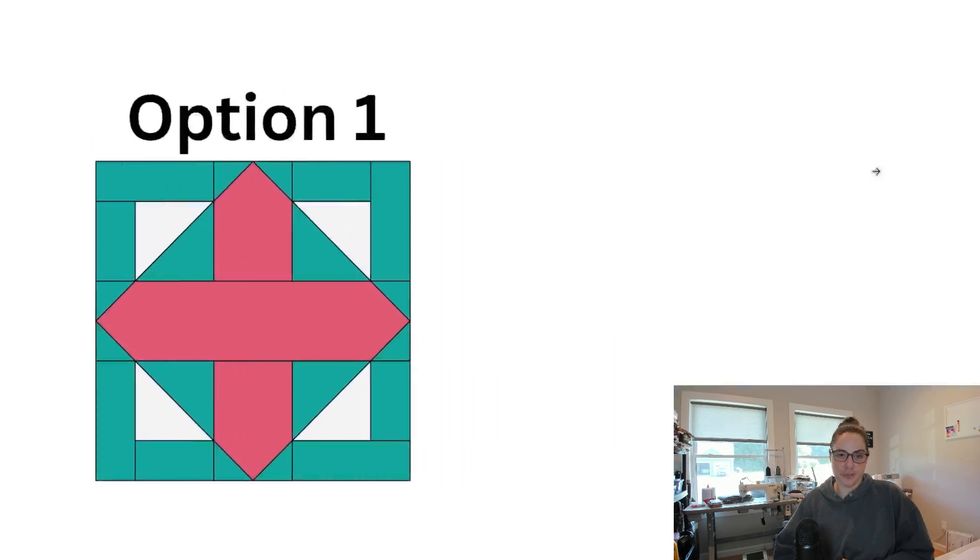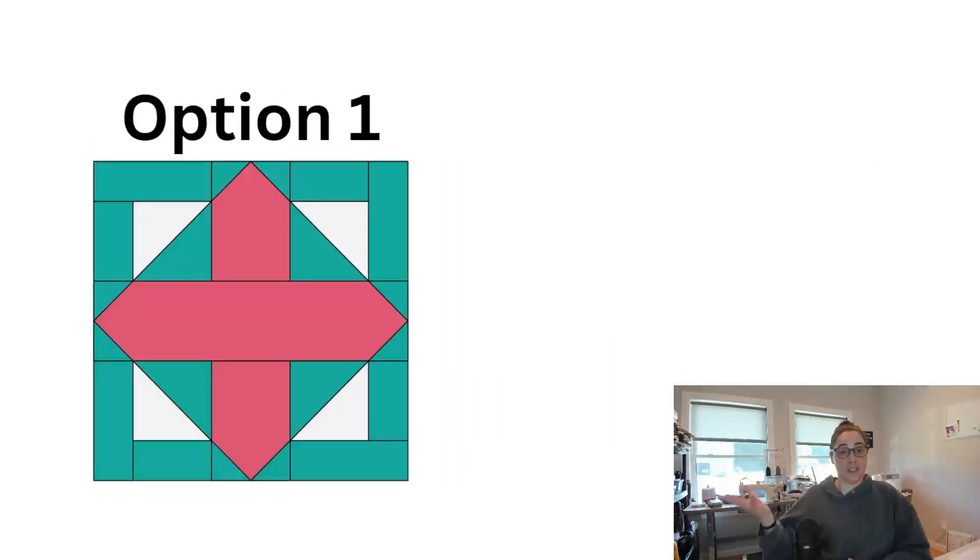So let's look at a first option. This is basically just the block as is. I've drawn lines where I think seams could go so that I can figure out a method to construct it. Basically, you would use a rectangle and do stitch and flip corners in order to make the points there. We do the same with a set of rectangles here for the top and bottom vertical points. And then you'd make four HSTs and then sew basically rectangles to either side of that to make your corner segments. Sew everything into rows and then sew the rows together into the finished block.